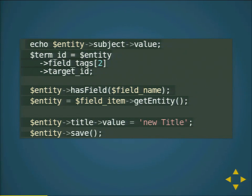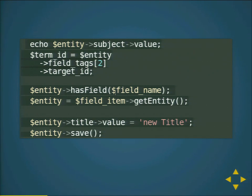There are also methods that make it easier to deal with fields on an entity, like asking an entity whether it has a field with a certain name. Field items are objects as well — they have defined interfaces and useful methods. On a field item you can ask it to give you the entity on which the field item lives. To update field values, it works with the same fluent API — just set a new value, save it, and you're good.